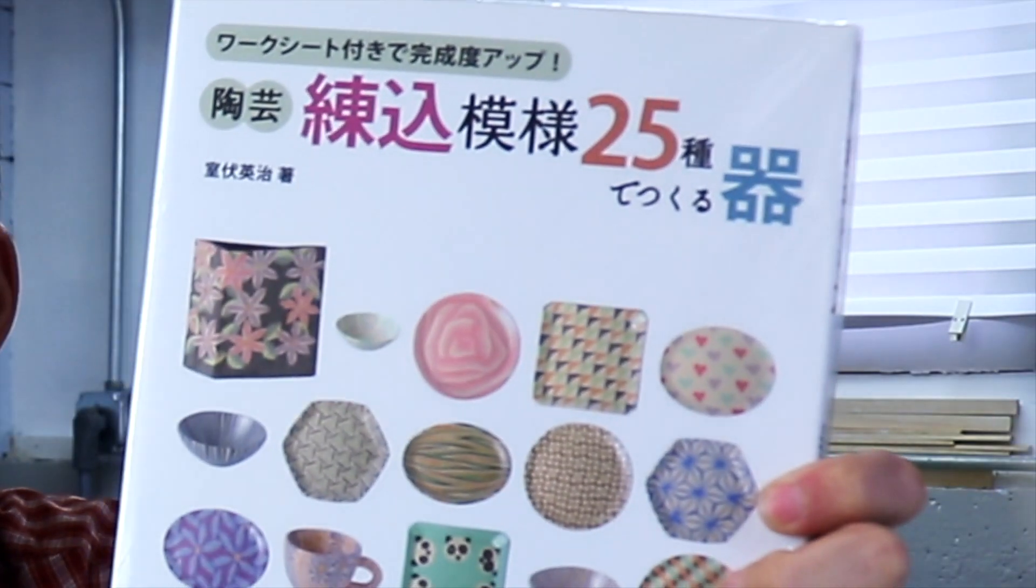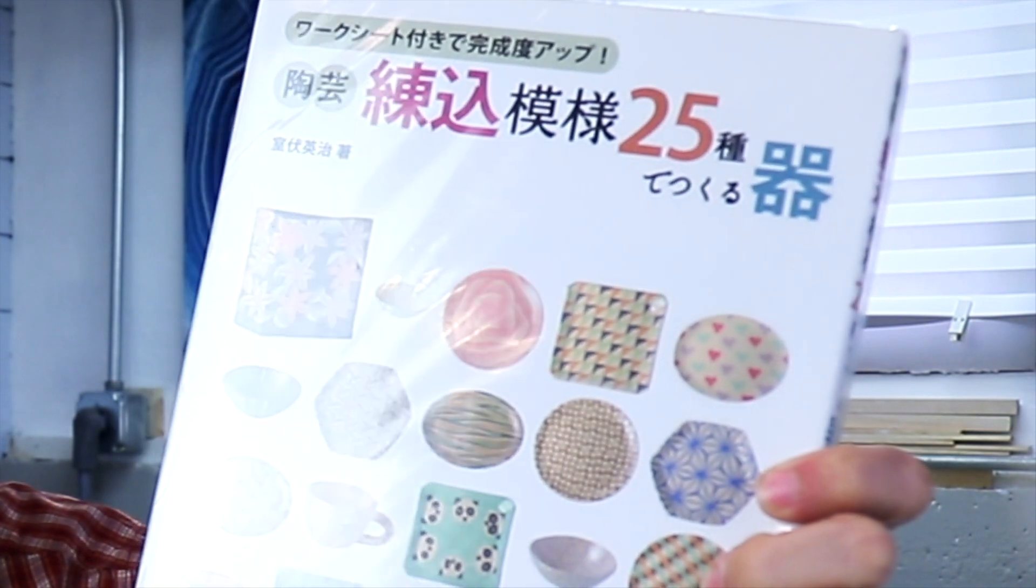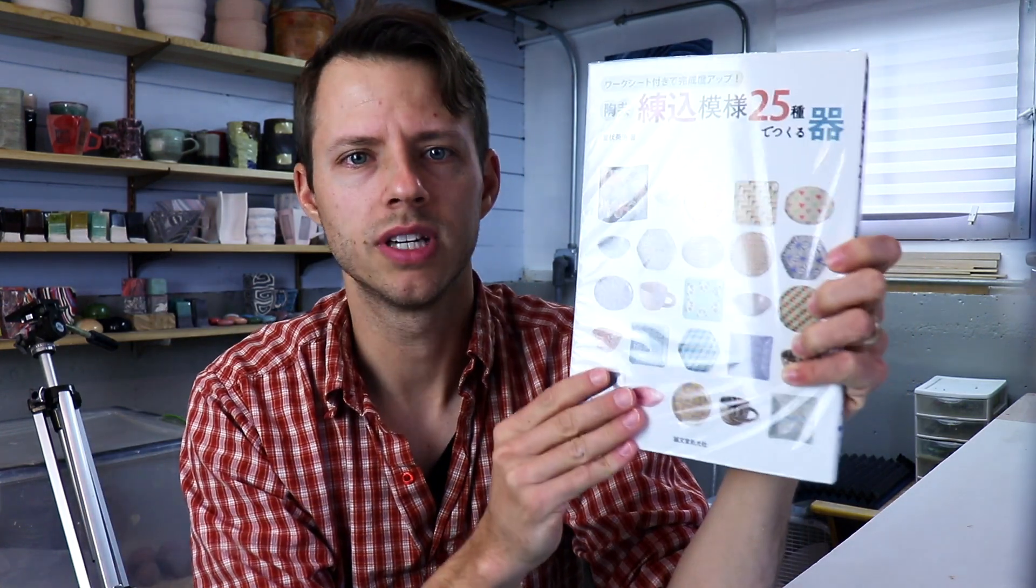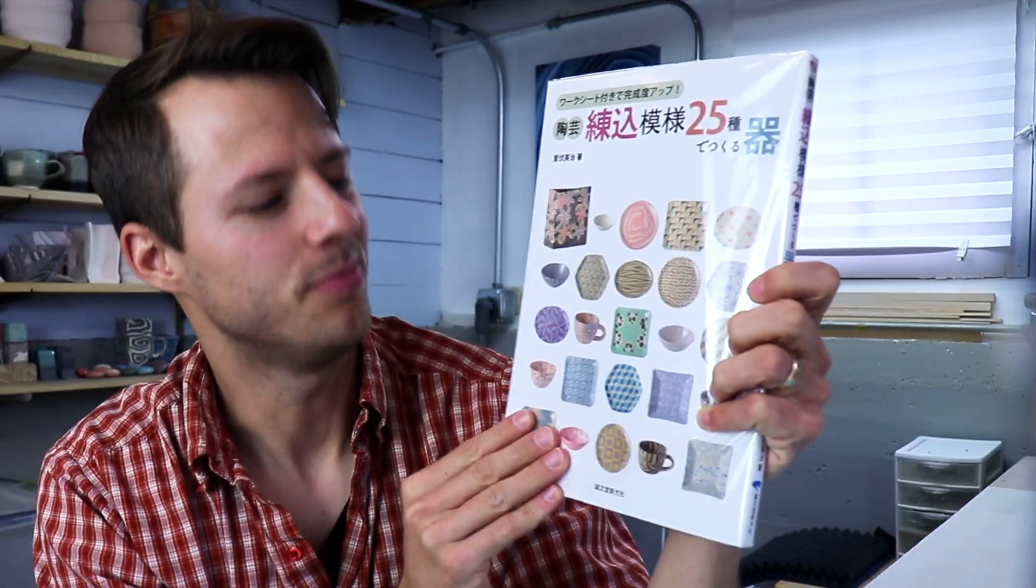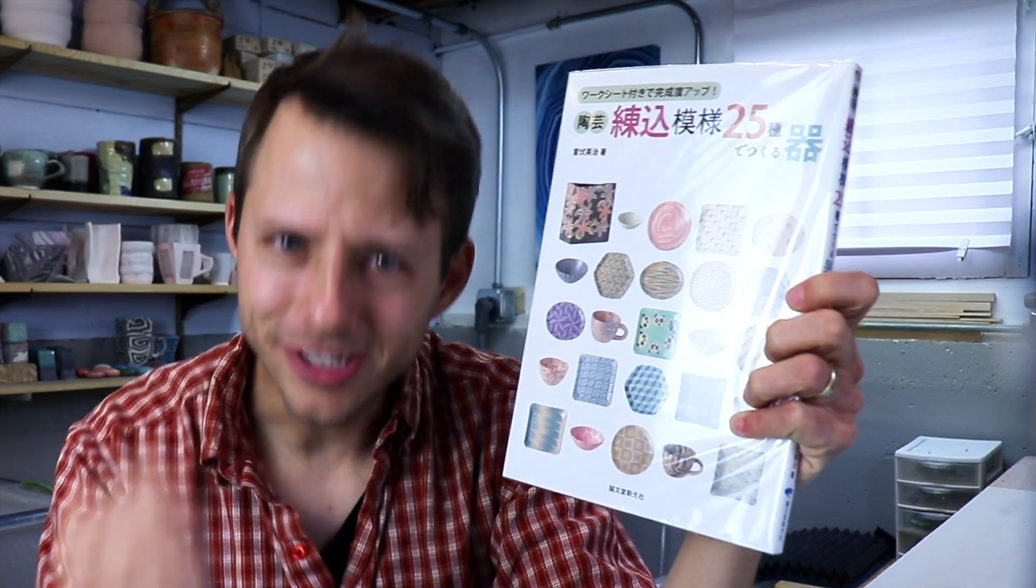Look at this thing. Super colorful. Completely in Japanese. I scoured the internet for anything I could find. There's some websites, there's some articles. Ceramic Arts Daily has an article about Narakomi. There's an American book about coloring clay. So this was a book on Amazon that is all about Narakomi and the process of layering colored clays. This book here is a Japanese book on Narakomi. I'm super excited for this.